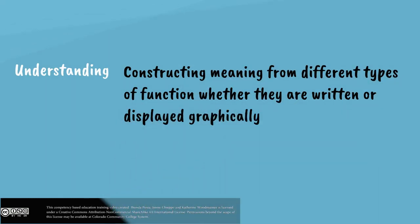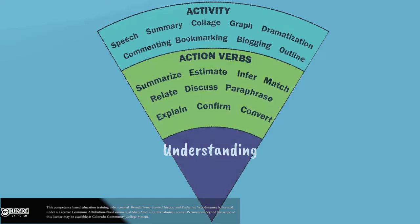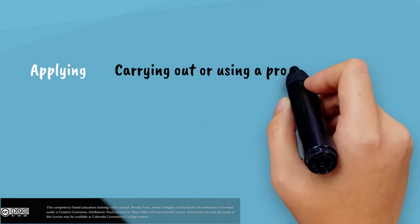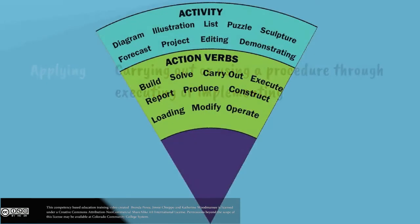Some of the key verbs for understanding include summarizing, inferring, paraphrasing, and classifying. The next level is applying. It is carrying out or using a procedure through executing or implementing. Some of the key verbs associated with applying include carrying out, executing, loading, and operating.